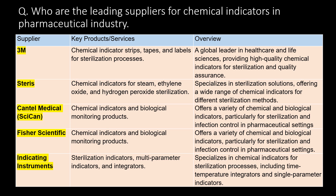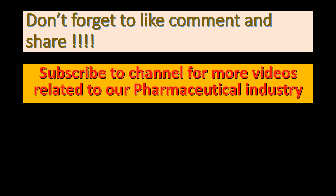Who are the leading suppliers for chemical indicators in the pharmaceutical industry? 3M, Steris, Cantel Medical, Fisher Scientific, and Indicating Instruments are the leading suppliers for chemical indicators in the pharmaceutical industry. Don't forget to like, comment, and share. Subscribe to the channel for more videos related to the pharmaceutical industry.